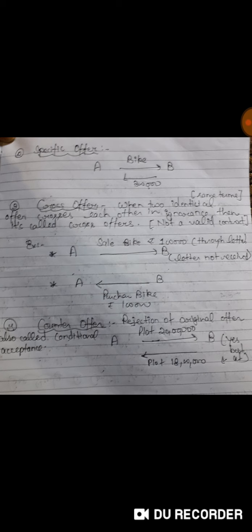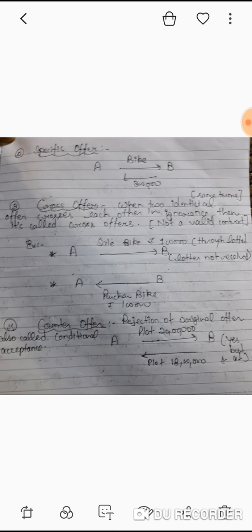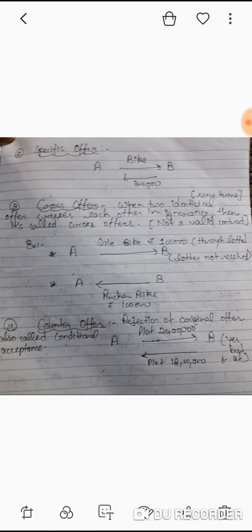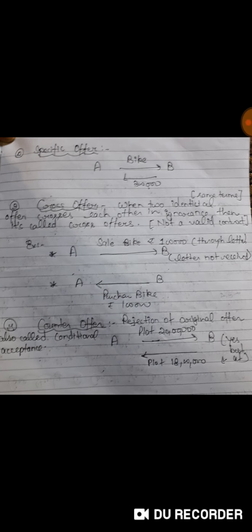For example, A is giving an offer to B for sale of a bike for rupees 1 lakh through letter. A sends this message through letter and B didn't receive any letter. In our next example, B is giving similar offer to A for purchase of bike for rupees 1 lakh. Both offers are identical and both are crossing each other. That is known as cross offer.